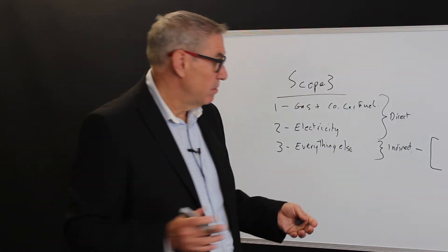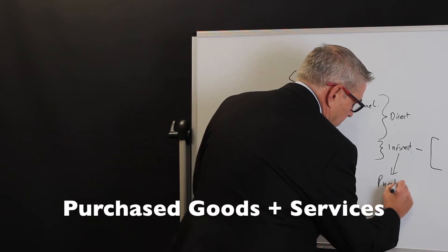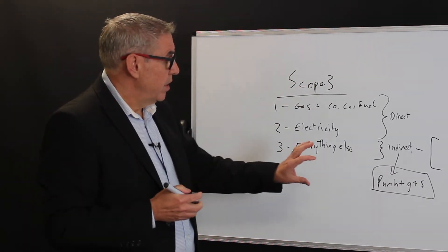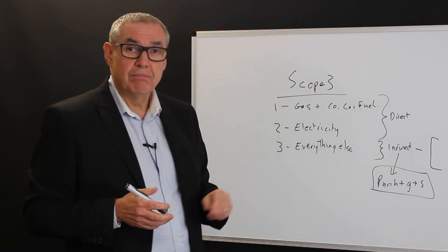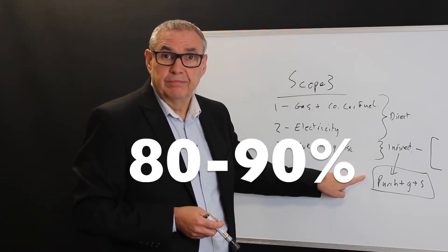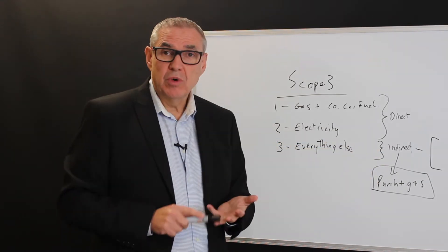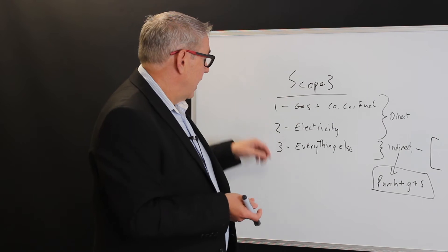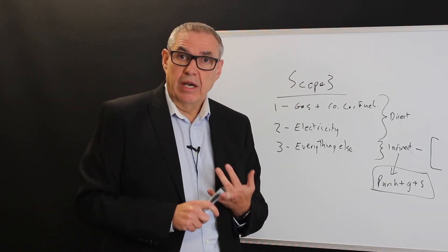Scope 3 is split into 15 different subcategories. The first and biggest category by a long shot in my experience is purchased goods and services, also known as supply chain carbon. In my experience, this is where a huge amount of carbon is emitted, and if you're including scope 3 in your carbon footprint, this can sometimes be 80 to 90% of your total carbon emissions — so it's large and important. Scope 3 emissions are generally more complex to work out than scope 1 and 2; the data is less precise, there are often data quality issues, and it normally dwarfs scope 1 and scope 2.